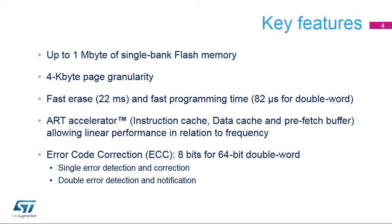The programming time is only 82 microseconds for a double word. The adaptive real-time memory accelerator, with an instruction cache, a data cache, and a pre-fetch buffer, allows a linear performance in relation to frequency. The flash memory supports error code correction, or ECC, which is 8 bits long for each 64-bit double word.